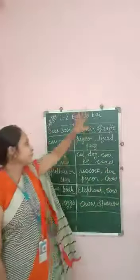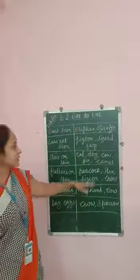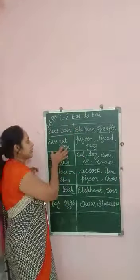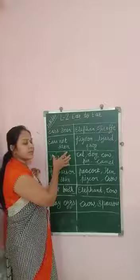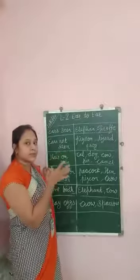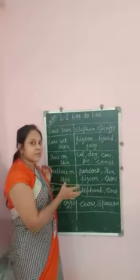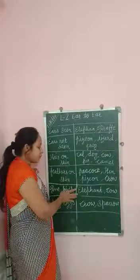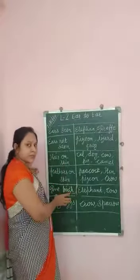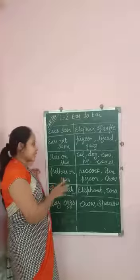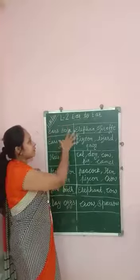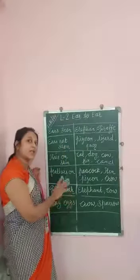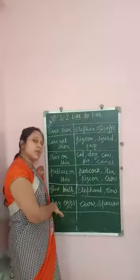So we divide these animals and birds based on their ears, their skin, and how they give birth — these three types. We divide these animals and birds.